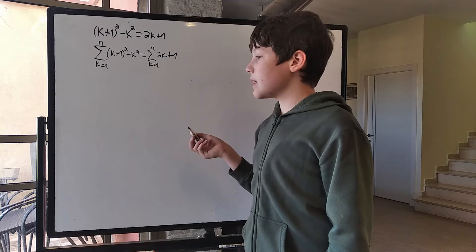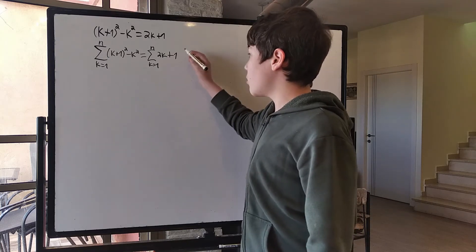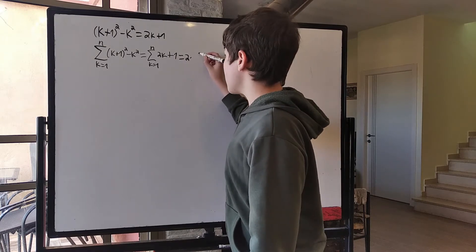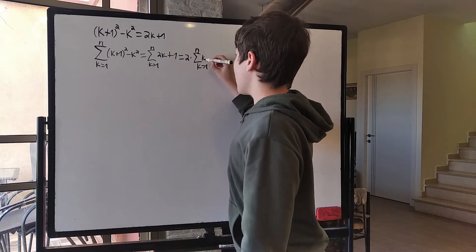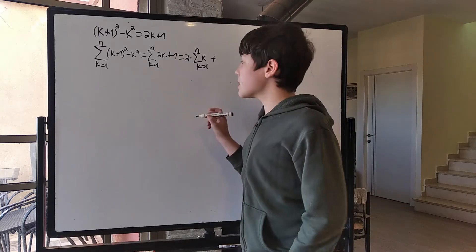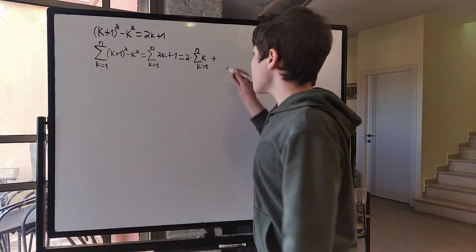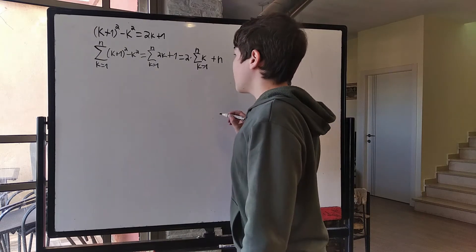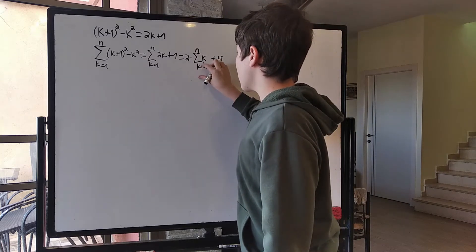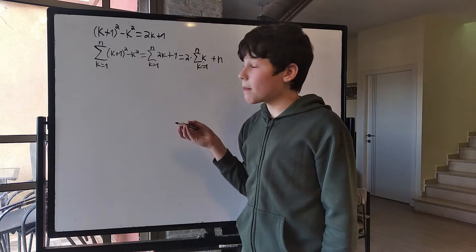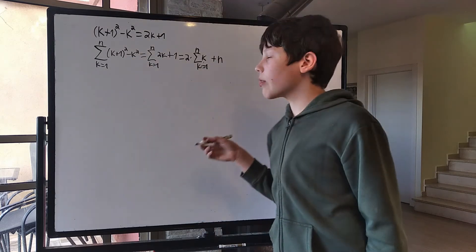It might look like I'm making things more complicated, but on the right-hand side we can easily see this is just 2 times the sum from k=1 to n of k, plus the sum from k=1 to n of 1. That sum of 1's, added n times, is just n. And because this contains the sum from 1 to n of k — which is what we want to find — that is good.